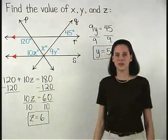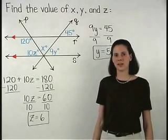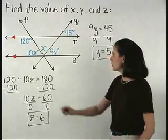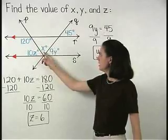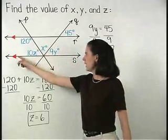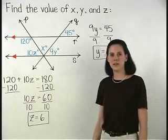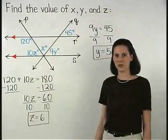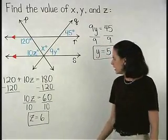Finally, to find the value of x, notice that the angles marked as 10z, x, and 9y form a straight angle, so we know that these angles must add to 180.